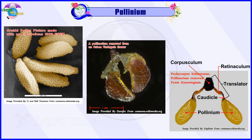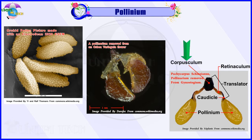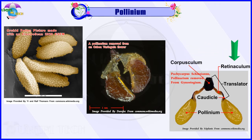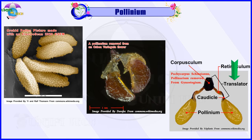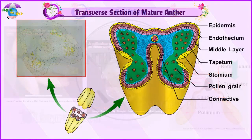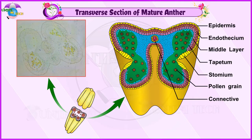Pollinia are attached to clamp or clip-like sticky structures called corpus clump. The filamentous or thread-like part arising from each pollinium is called retinaculum. The whole structure looks like an inverted letter Y and is called a translator.